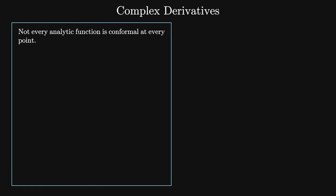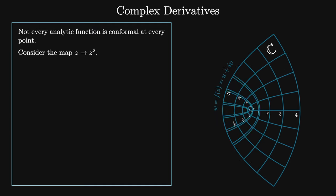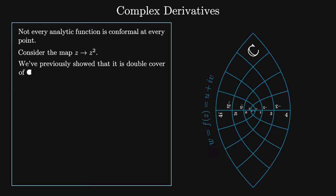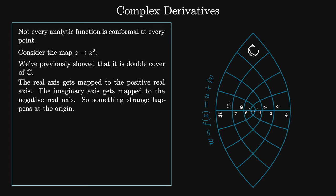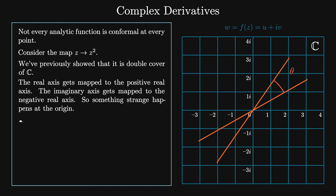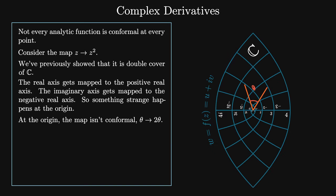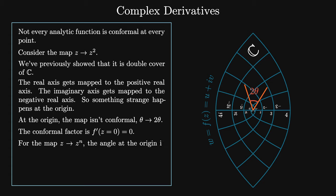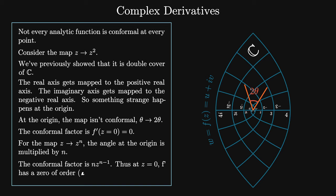Not every analytic function is conformal at every point. Consider z → z². We've shown this map is a double cover of ℂ: the real axis maps to the positive real axis and the imaginary axis maps to the negative real axis, so something strange happens at the origin. At the origin the mapping isn't conformal — theta goes to 2 theta, and the conformal factor f′(0) = 0. Equivalently, for z → zⁿ, the angle at the origin is multiplied by n, and the conformal factor is n·z^{n−1}. At z = 0, f′ has a zero of order n − 1. Such points that are not conformal are called critical points.